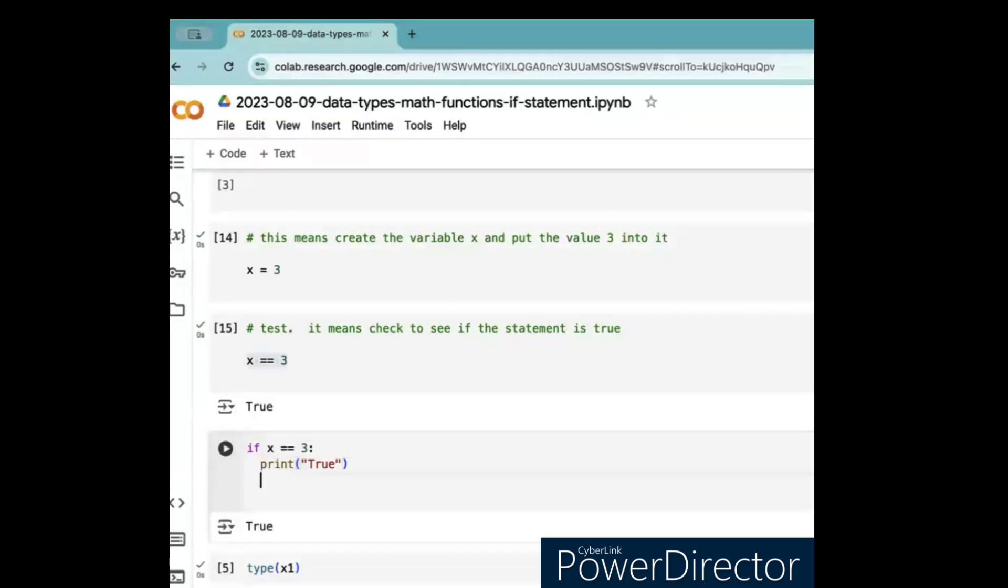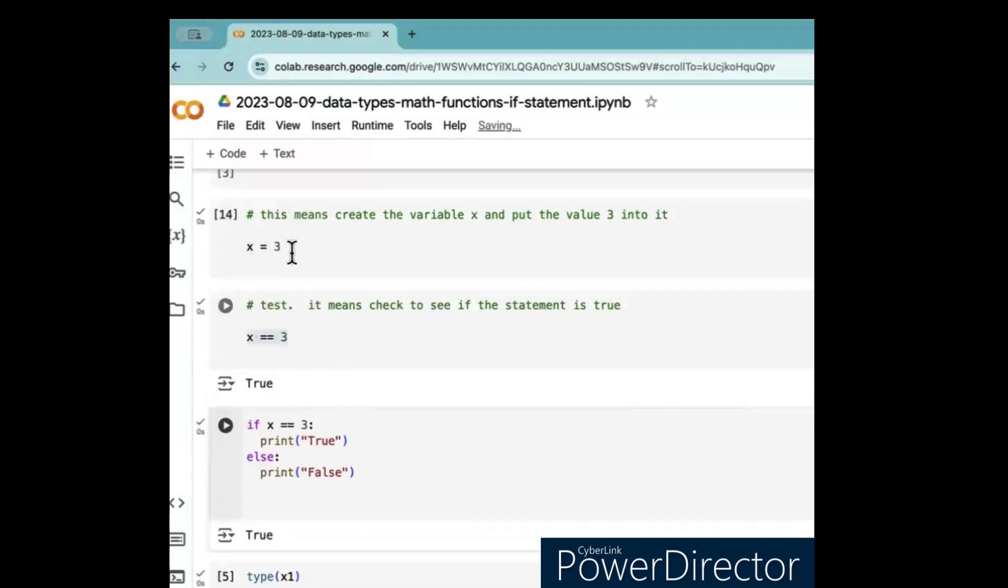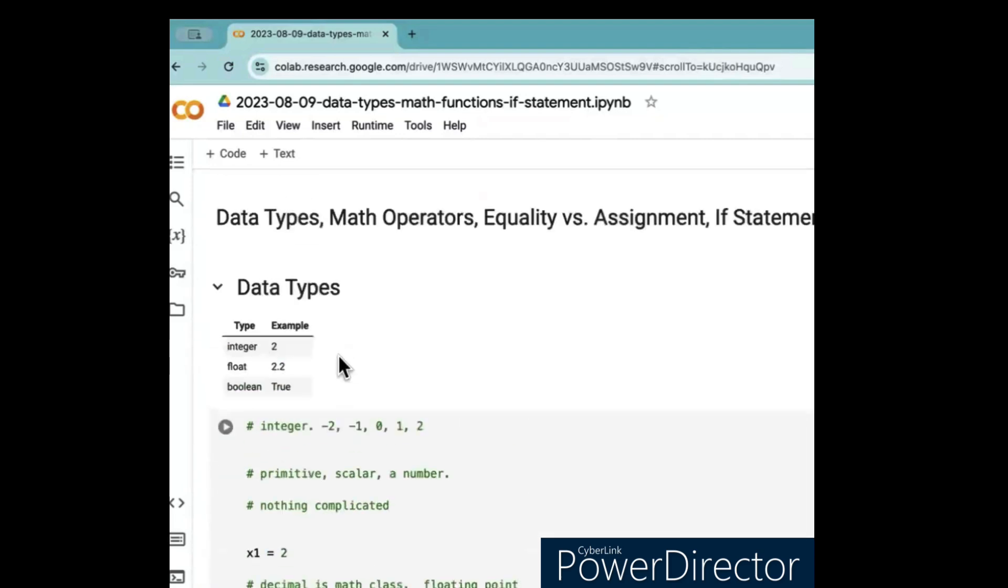Now, we can also do this. We could say... We could say else... Let's print... False. So, let's change this to be 4. Now, let's run this. What's it going to say? Okay. We'll say false. It will say false because x is not 3. Yeah. Now, there's... Okay. So, we have here... We have... Let's go back up to this list here.